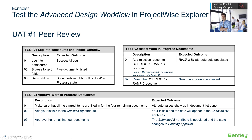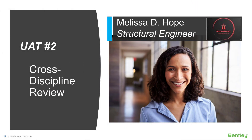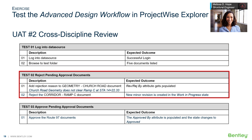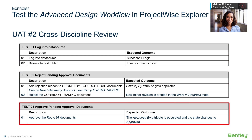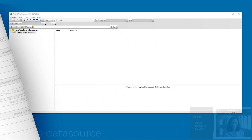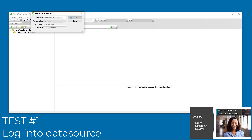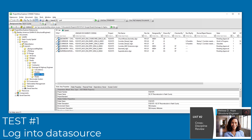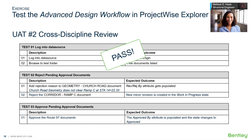We can now execute the cross-discipline review UAT. Melissa is one of the structural engineers for our highway project. She will test the cross-discipline review for us. Melissa will perform three tests: Test 1, log into the data source; Test 2, reject a pending approval document; Test 3, approve pending approval documents. For Test 1, Melissa logs into the data source and browses to the test folder. She then reviews each document in the pending approval state in the appropriate application, such as OpenBridge Designer. Test 1 passes.